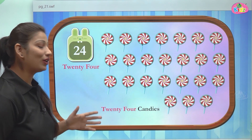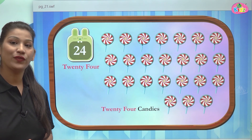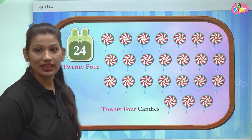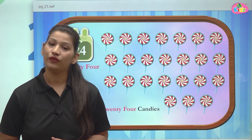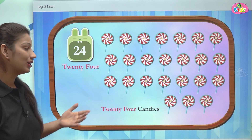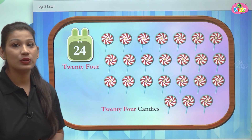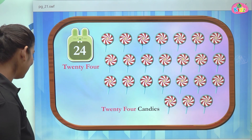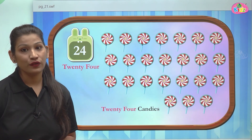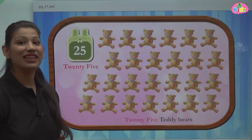They are a total of 24 candies. 24 is written as 20 and 4 — T-W-E-N-T-Y for 20 and F-O-U-R for 4, giving 24. After 24, what is the next number? It is 25.